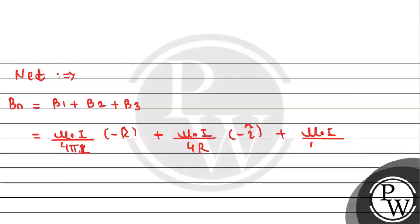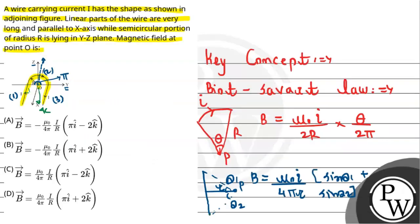Since we need the net magnetic field at point O, the net magnetic field at point O equals B1 plus B2 plus B3. That means mu naught I divided by 4 pi R minus k hat plus mu naught I divided by 4R minus i hat plus B3 which is mu naught I divided by 4 pi R minus k hat.